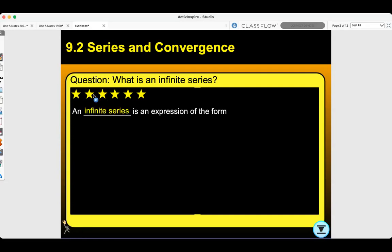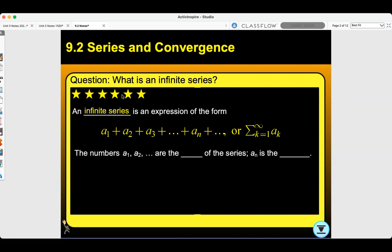An infinite series is an expression in the form a1 plus a2 plus a3 all the way to a_n, or the sum of a_k from k equals 1 to infinity. The numbers a1, a2, all the way through are the terms of the series, and a_n is the nth term.